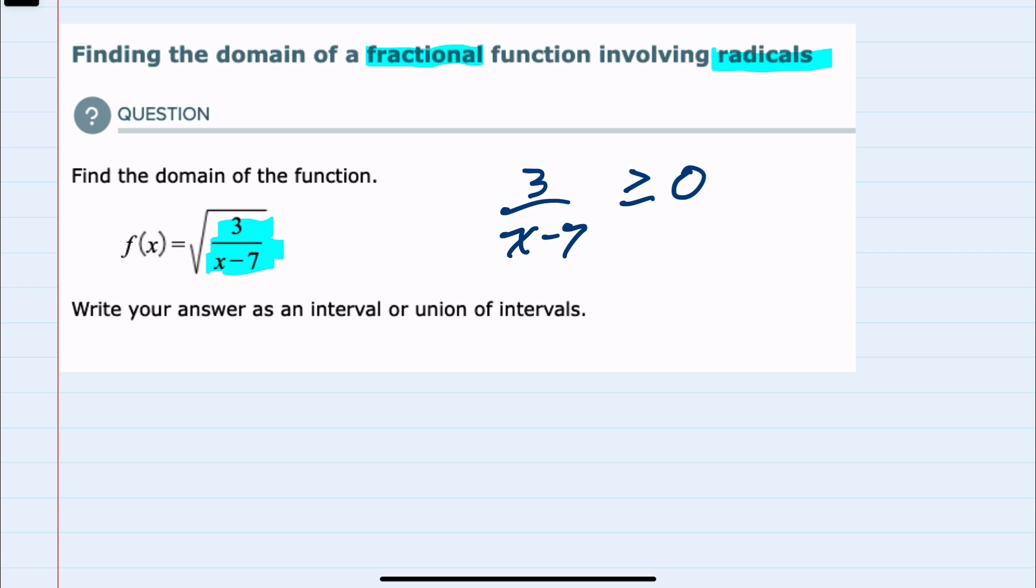The first thing to note is that in order for this to be positive, in order for the 3 over x minus 7 to be positive, the numerator is positive. So as long as the denominator...